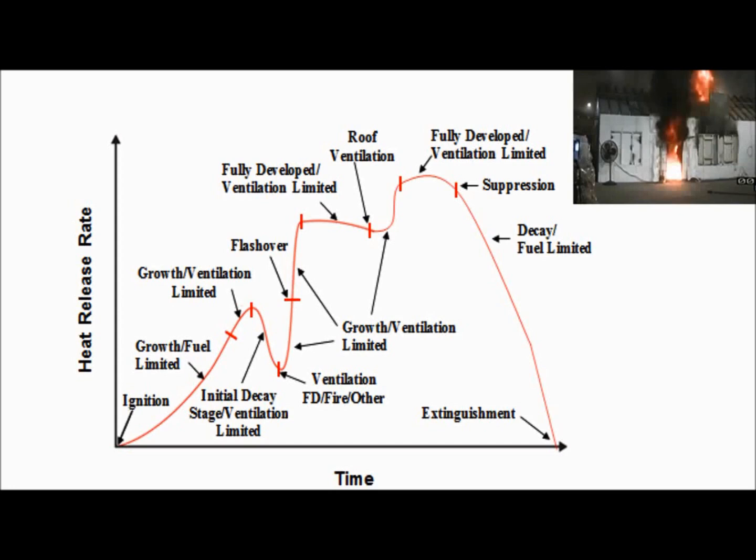Then we hit it with water and get to the decay stage. What would happen if we took that window out after making the roof cut? We come up again — another growth stage, another fully developed stage — until we get water on it or run out of fuel. Then we get to the decay stage.